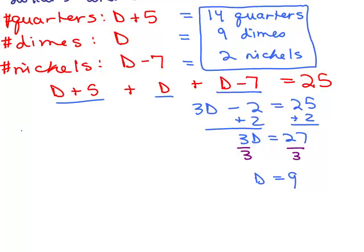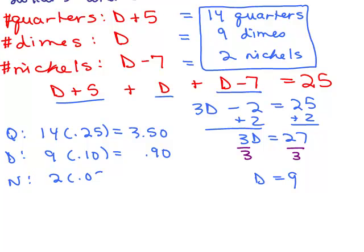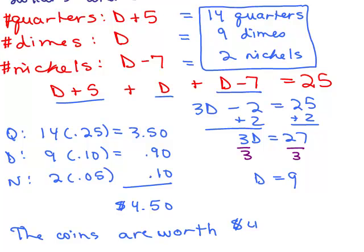All right, next part of the problem was how much is it worth? Well, how much are 14 quarters worth? Okay, I'm going to just say, well, the quarters, you've got 14 quarters, and how much is each quarter worth? It's worth 25 cents, so what's that going to be? $3.50, and how many dimes do I have? I've got 9 dimes, each dime is worth 10 cents, so I've got 90 cents in dimes. And nickels, I've got 2 nickels, each are worth 5 cents, so I've got 10 cents in nickels. So nothing surprising here, $4.10, I'm sorry, I did that wrong, $4.50, so we would say the coins are worth $4.50.